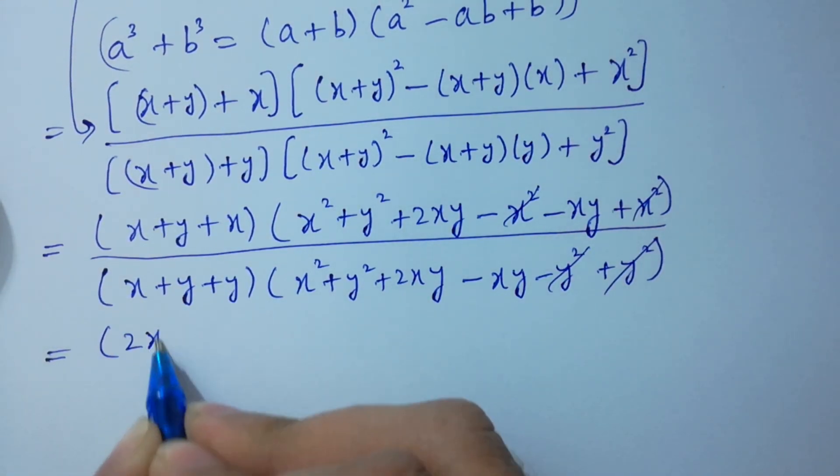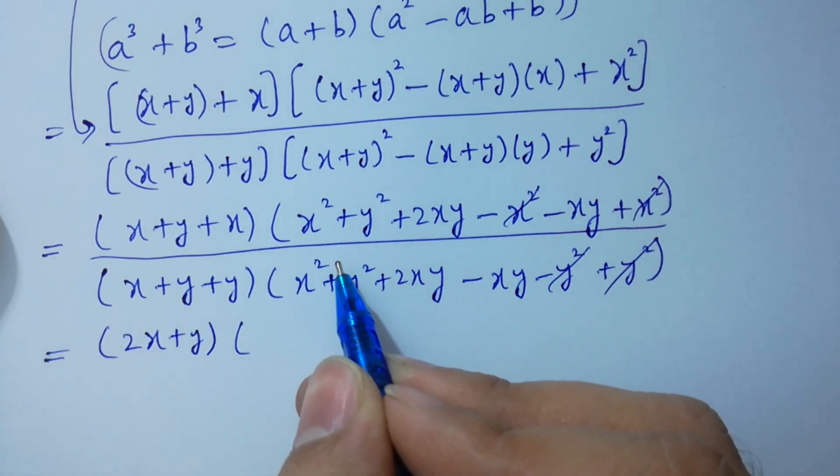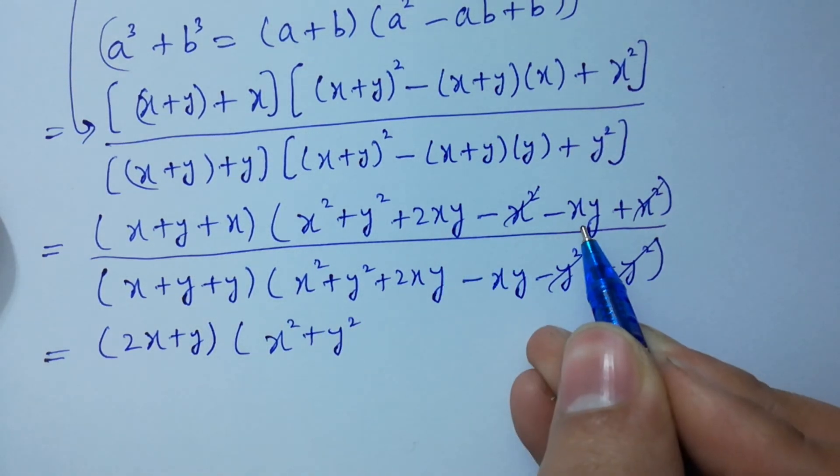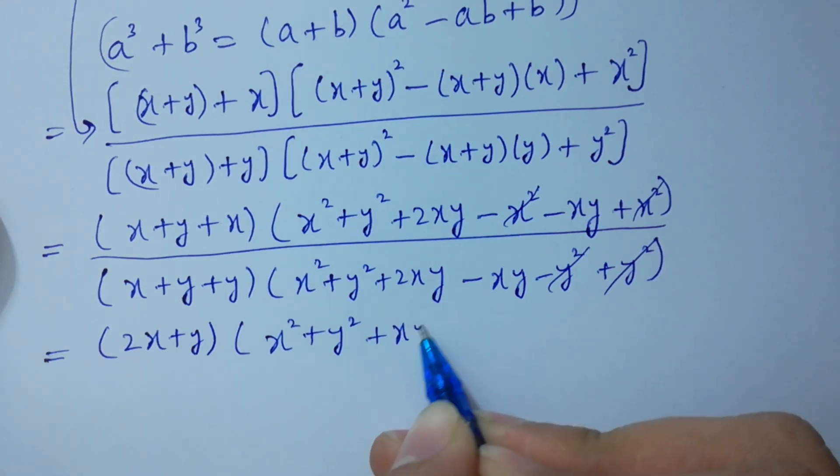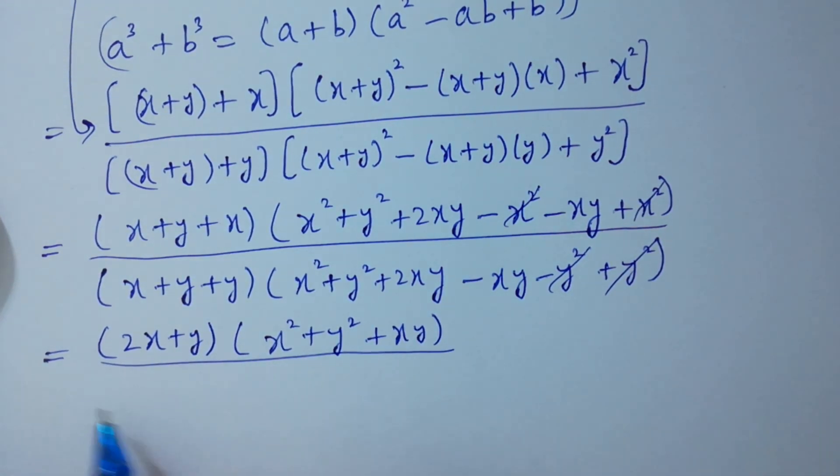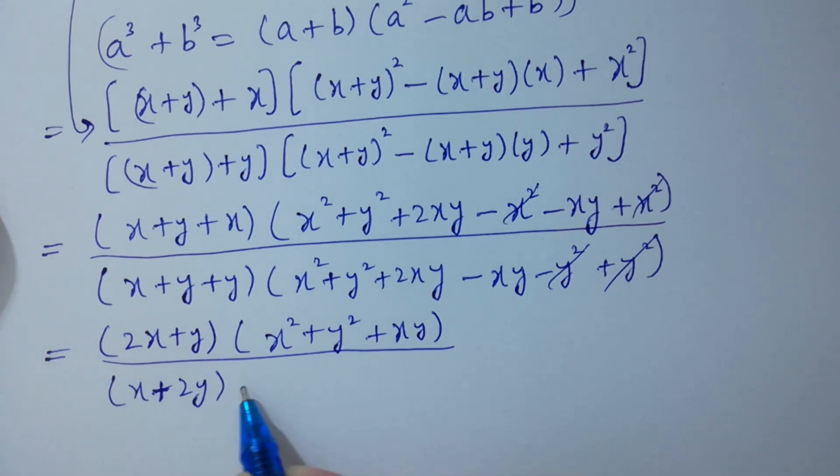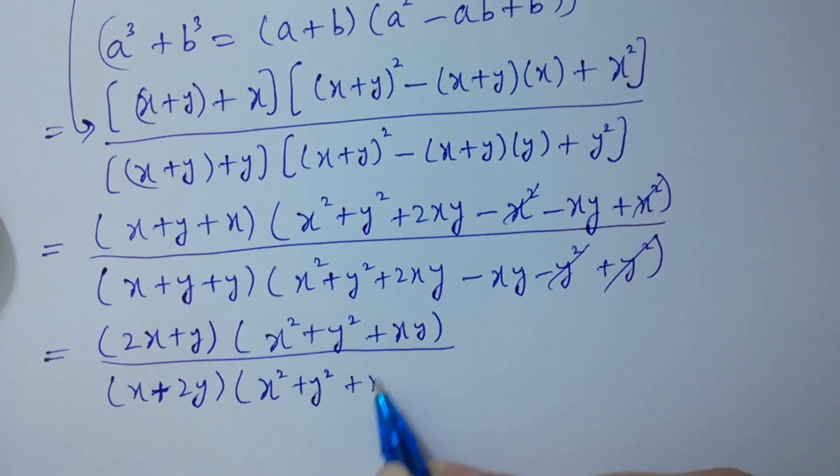We have x plus x, so 2x plus y, and here we have x square plus y square plus 2xy minus xy, so plus xy. X plus y plus y is 2y. Here we have x square plus y square, 2xy minus xy.